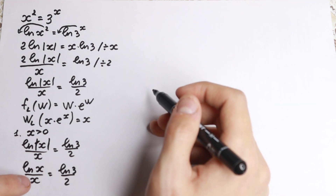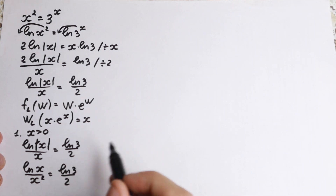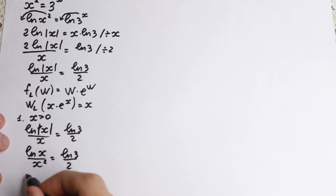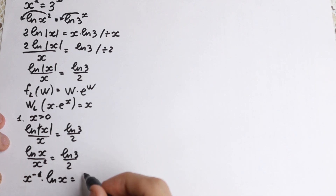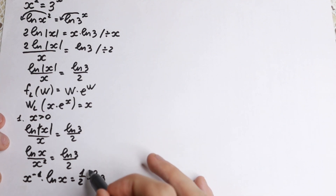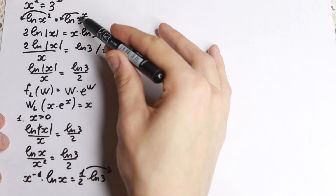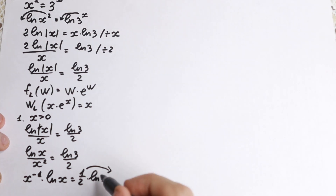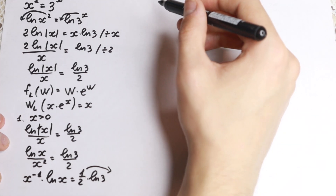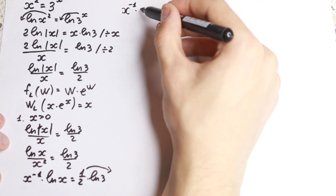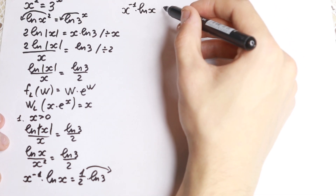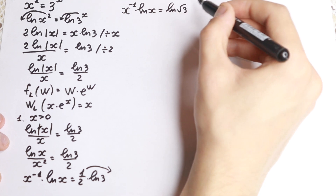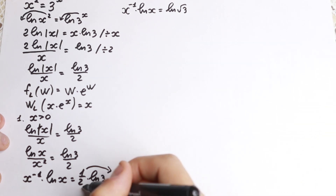Let's bring the x from the denominator to the numerator. Since x is to the first power, bringing it up gives x to the power minus 1 times natural log x equal to natural log 3 times one-half, which we write as one-half times natural log 3. Now we can bring the one-half inside the logarithm as a power, since one-half as a power means square root. So we have x to the minus 1 times natural log x equal to natural log of square root of 3.